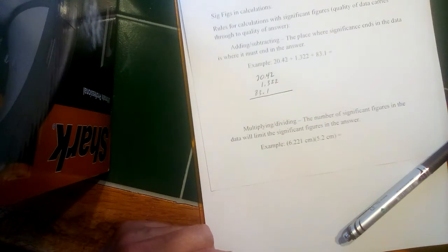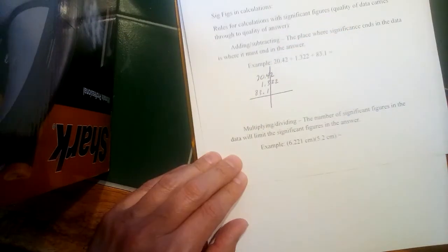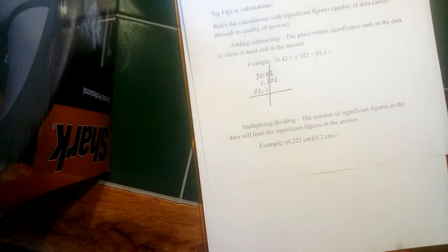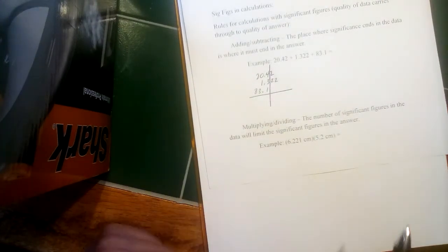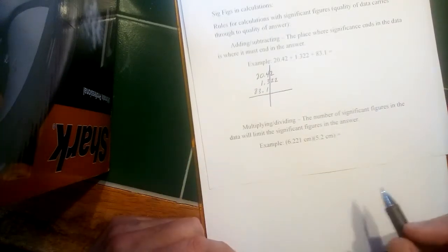And there's a reason why I stacked them up like this, because a helpful way to think about this is we can imagine a line right there, that comes in right where significance ends in whichever piece of data had significance end first, or furthest place to the left. That's where we're going to have to round our answers.